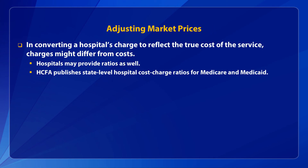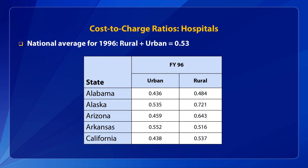To convert hospital charges to costs, several sources are available. Hospitals themselves might provide these data, or you can use the Health Care Financing Administration's cost-to-charge ratios provided by each state. Here is an example of those ratios published for 1996, noting that ratios differ by urban or rural location. The national average suggests that the true cost of a hospital inpatient admission in 1996 was 47% lower than the hospital charge for the same time period.